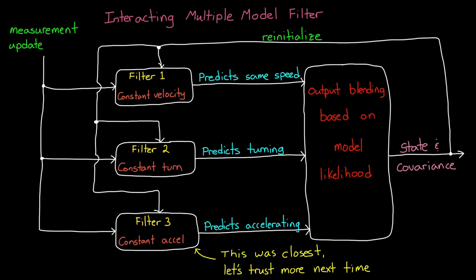So this is how we make up for the lack of control input information when tracking uncooperative objects. We build a model for each expected motion and then set up an IMM to blend them together based on the likelihood that they represent the true motion. Now before I end this video, I do want to address one more thing.